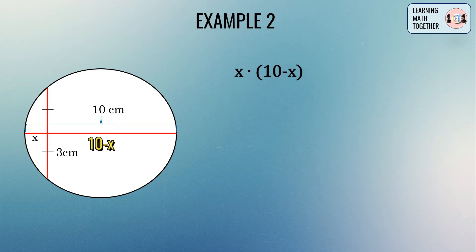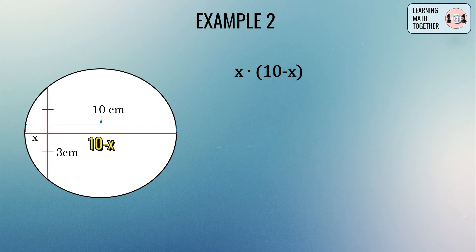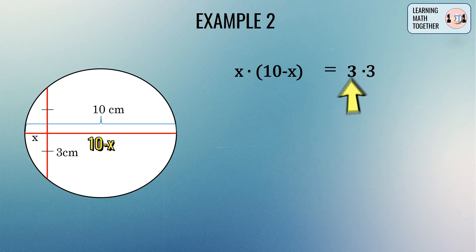Now we're ready to create the formula. We get the product of the two segments of one chord: x times (10 minus x), and equate that to the product of the two segments of the other chord, which is 3 times 3.